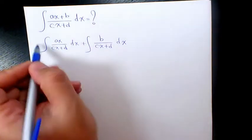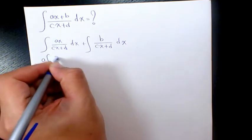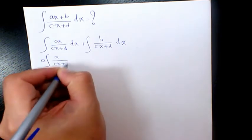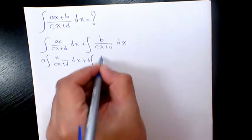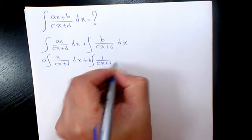Then I take a out, and here I'm going to have b times 1 over cx plus d dx.